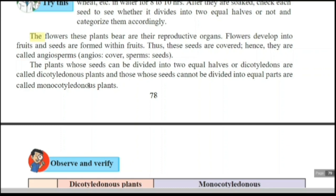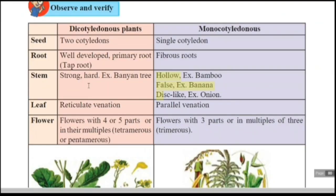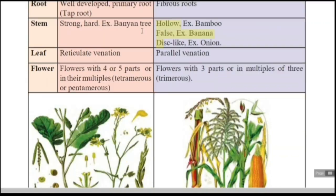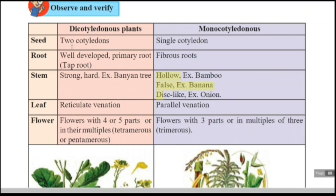Seeds that cannot be divided into equal parts belong to monocotyledonous plants — for example, wheat. There is a difference between dicotyledons and monocotyledons. Questions may ask for the differences or characteristics of monocotyledons or dicotyledons, so here is a comparative study. The first criterion is seeds.